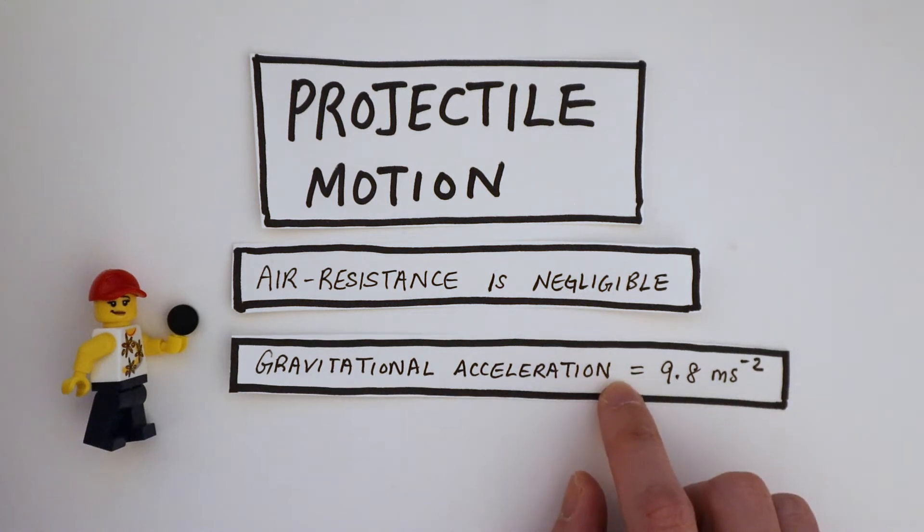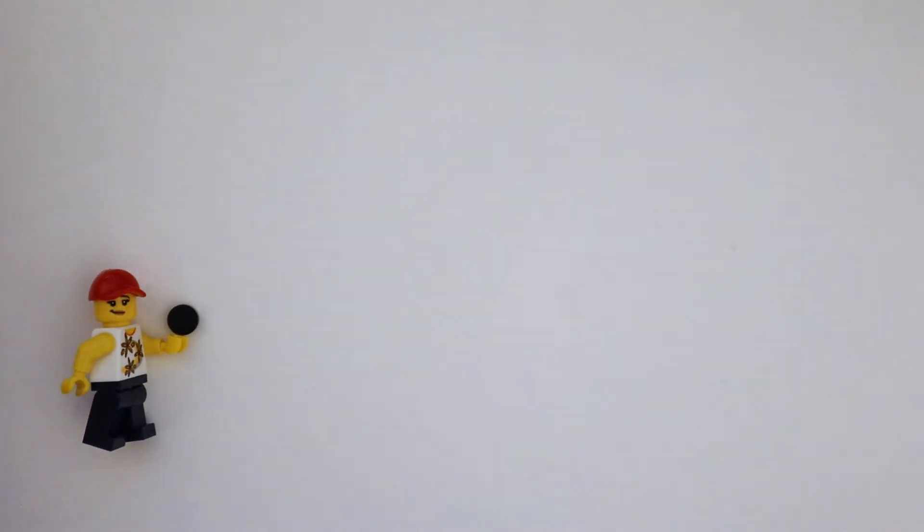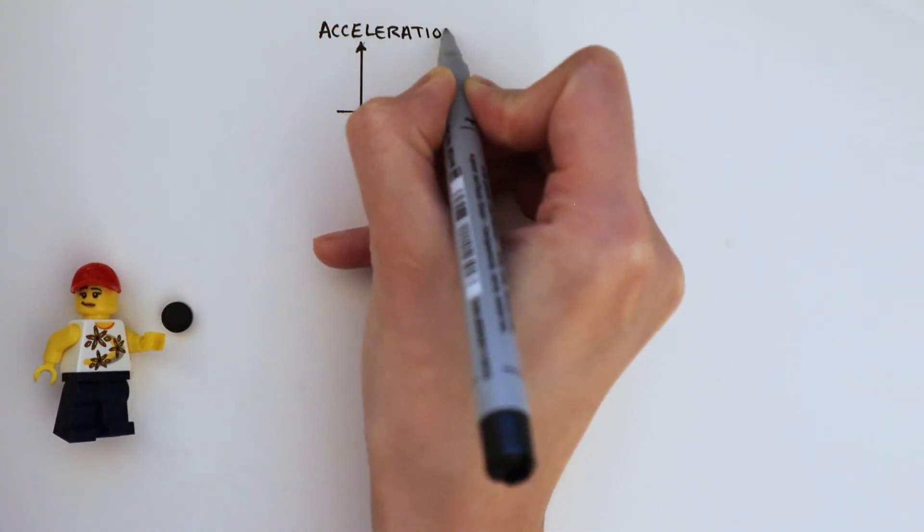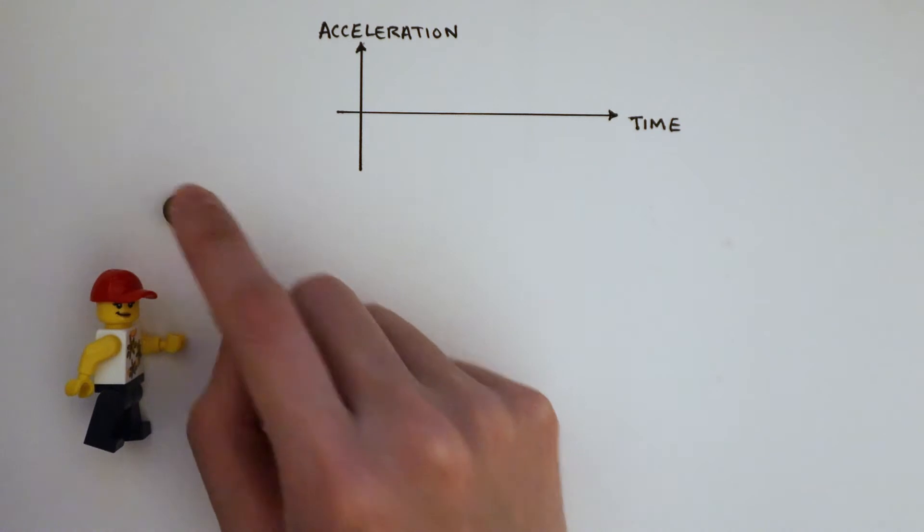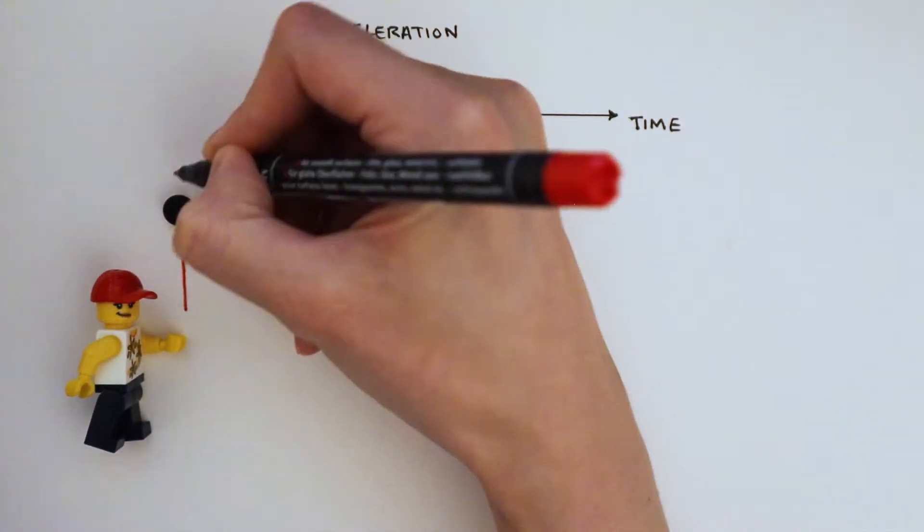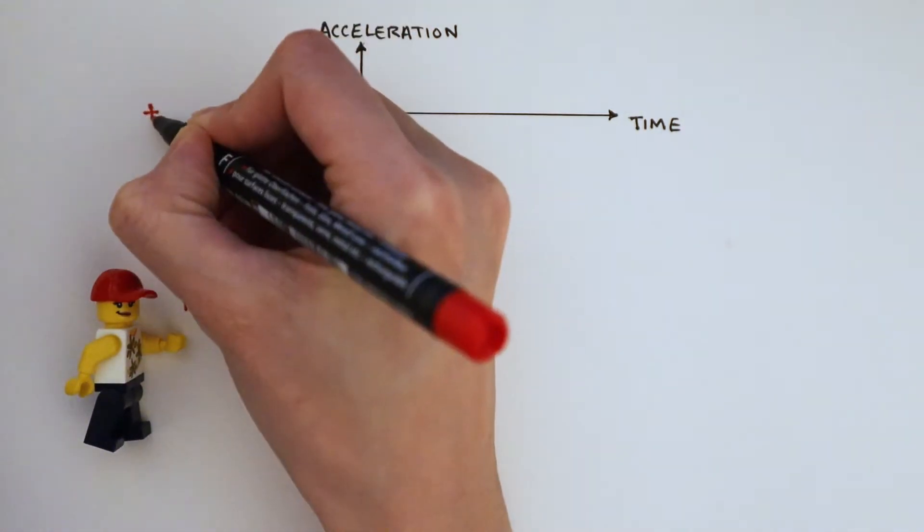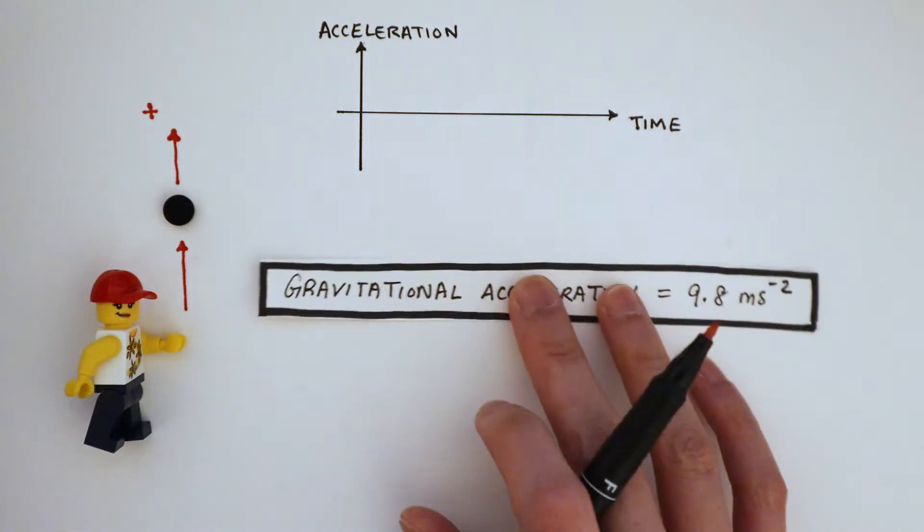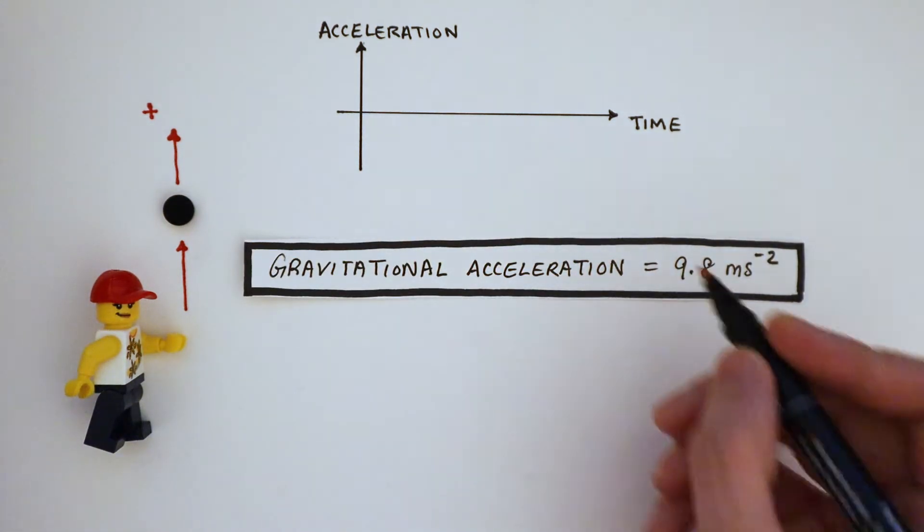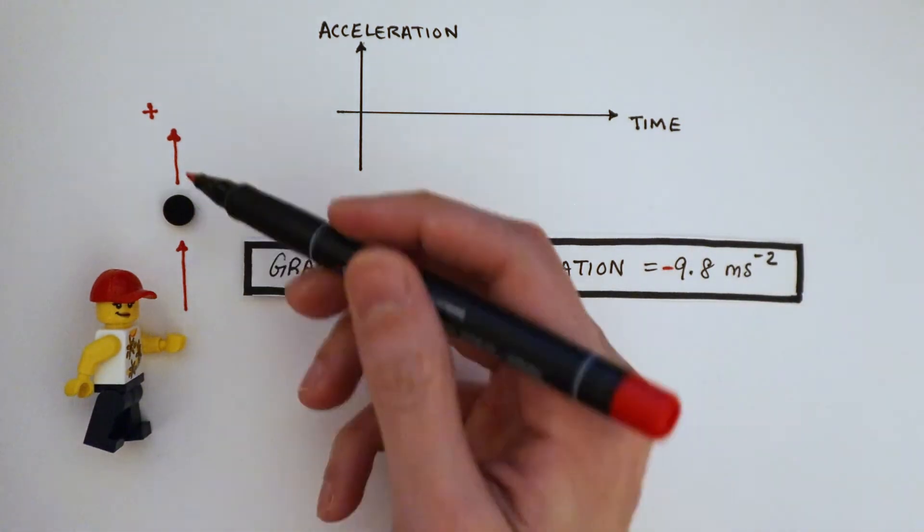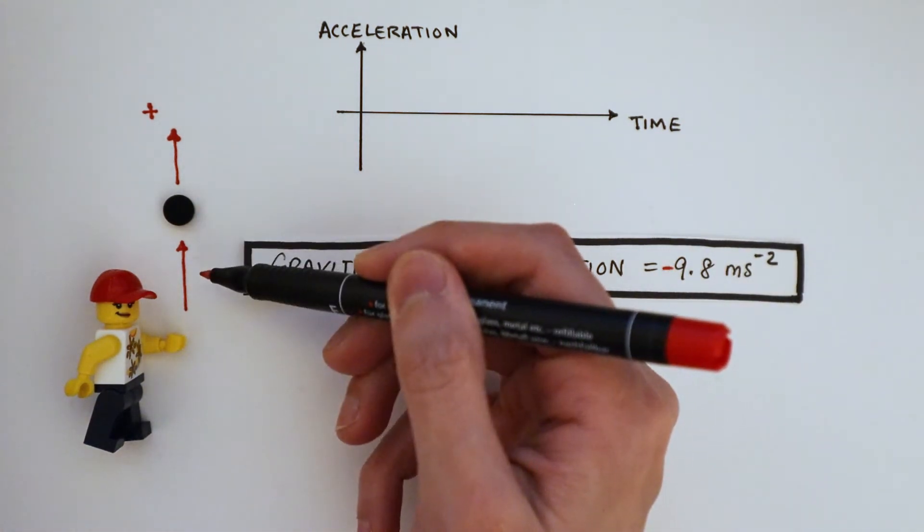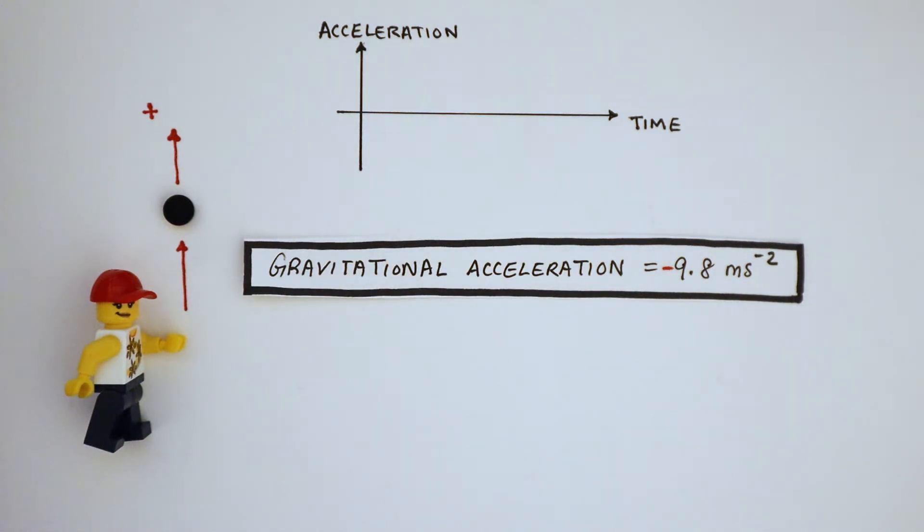From this information alone, we can plot our first graph: an acceleration time graph for this particular projectile motion. Since the ball's initial motion is upwards, let's make it the positive direction. The acceleration due to Earth's gravity is 9.8 meters per second squared. We have to put a negative sign here to show that acceleration is acting towards the Earth against the ball's motion.